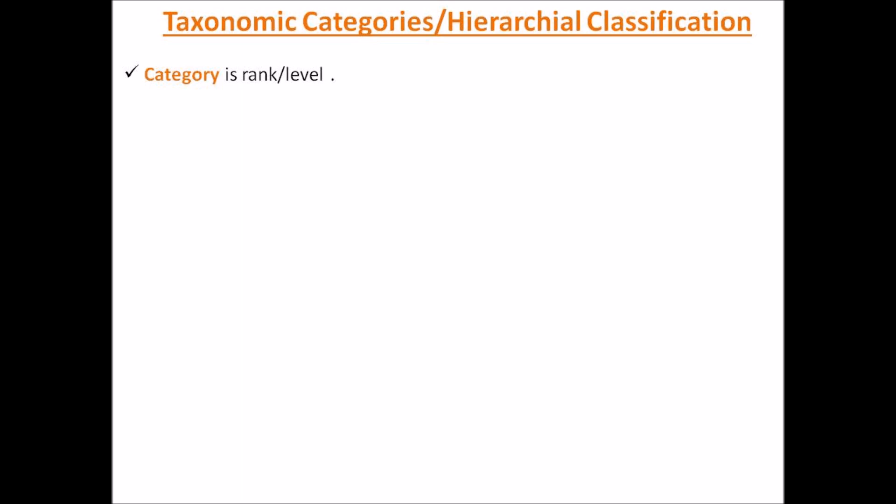The next question is: who proposed taxonomic categories? As discussed in the previous lecture, the term 'taxonomy' was given by Linnaeus, who is called the father of taxonomy. He was the one who proposed the Linnaean hierarchies or taxonomic categories — also called the Linnaean hierarchy — in which he arranged all organisms of the living world into certain categories, each representing a position in the system of classification.